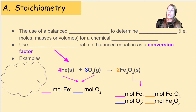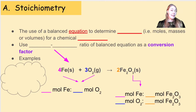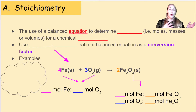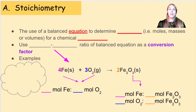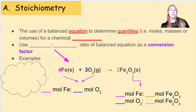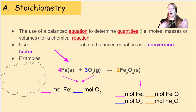Now what exactly do we mean by stoichiometry? We're going to be incorporating the use of balanced equations into the conversions that we were already doing with mole conversions. We've seen some of what we're about to do, but we're adding in the use of a balanced equation. This balanced equation is going to help us determine the quantities of a chemical reaction — those quantities might be moles, masses, or volumes.